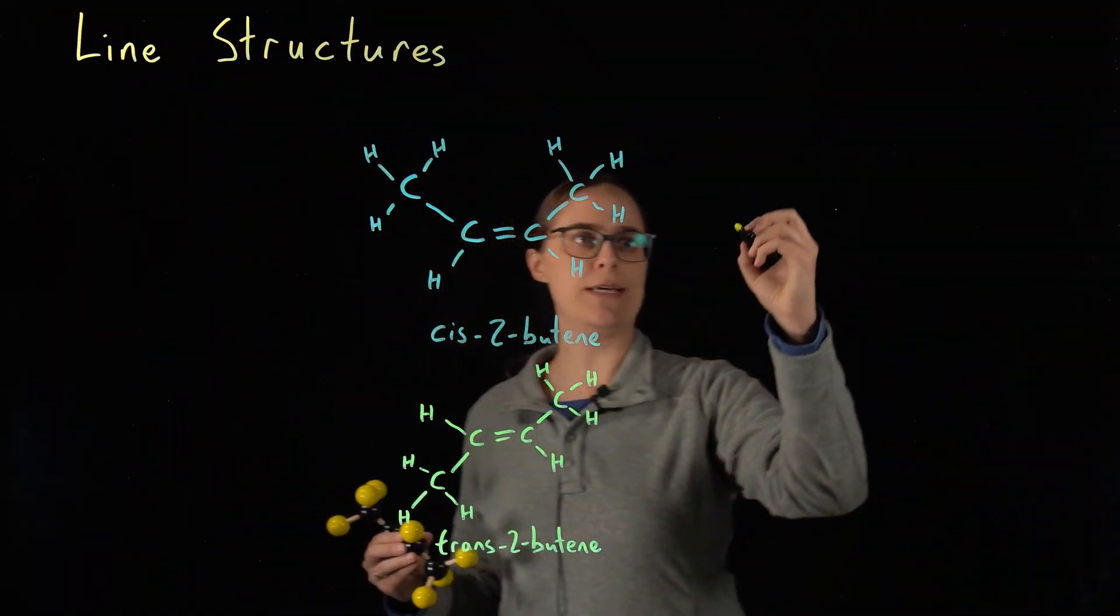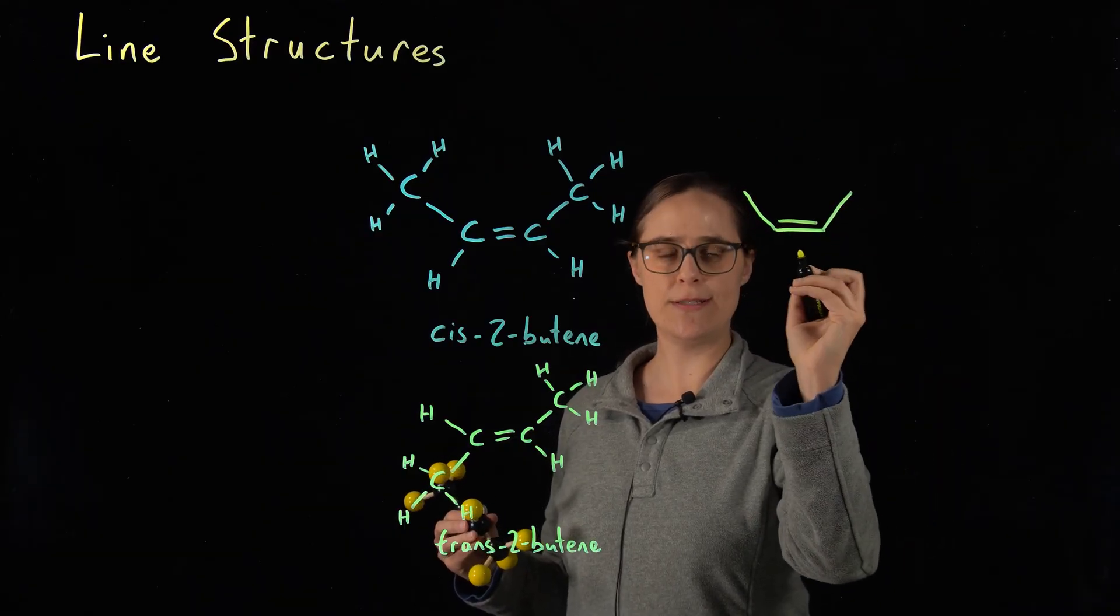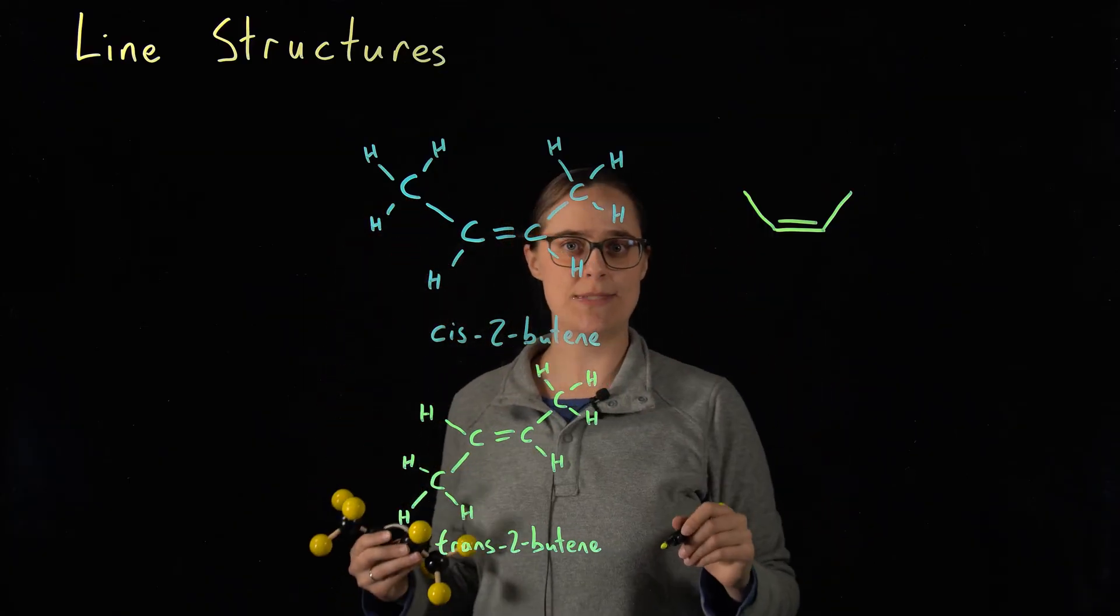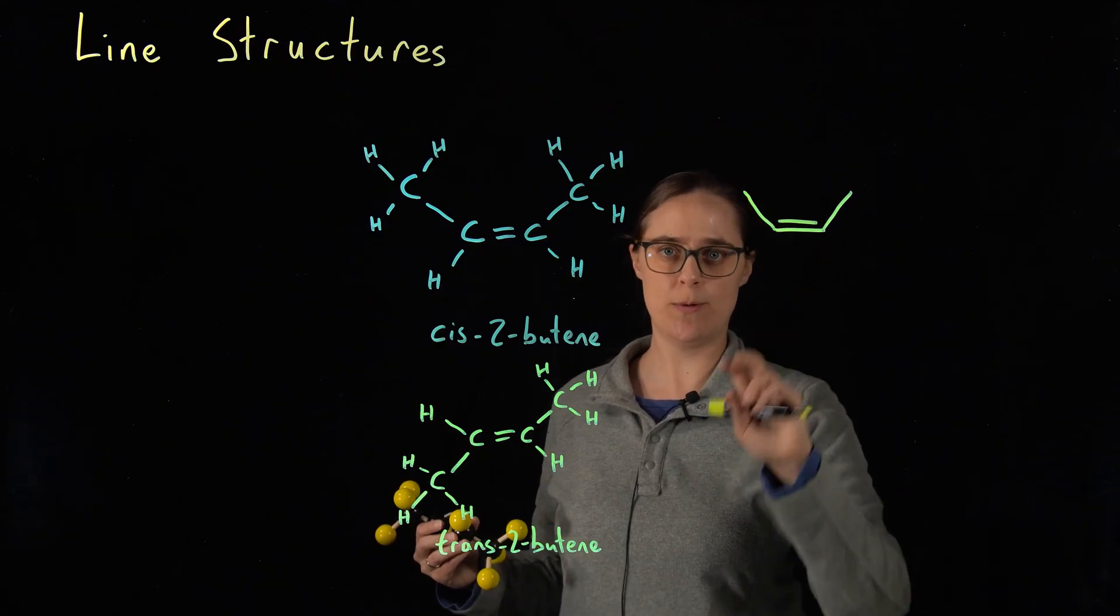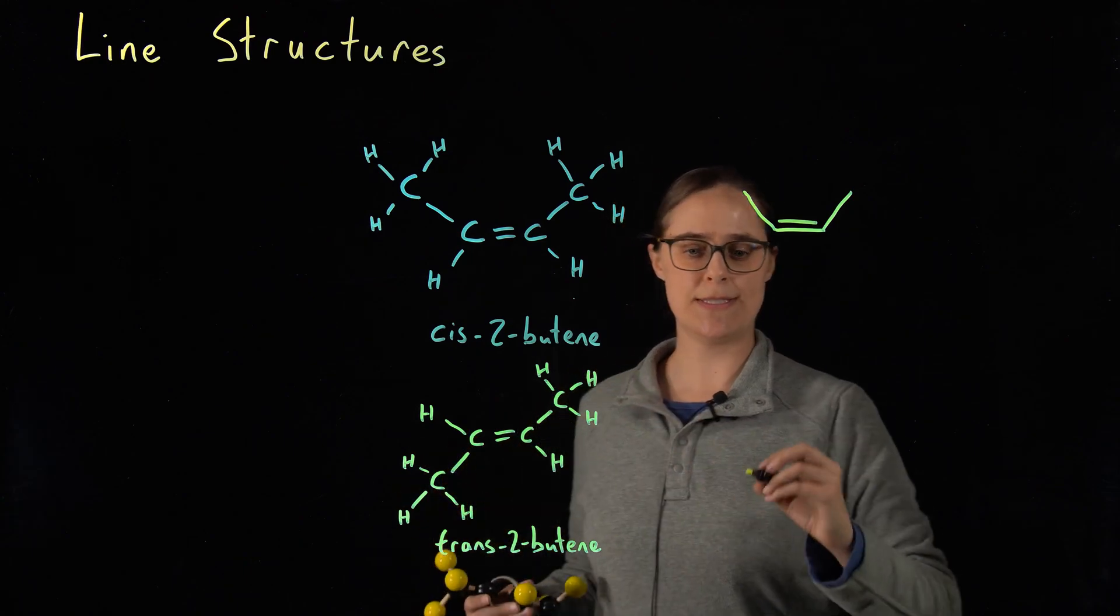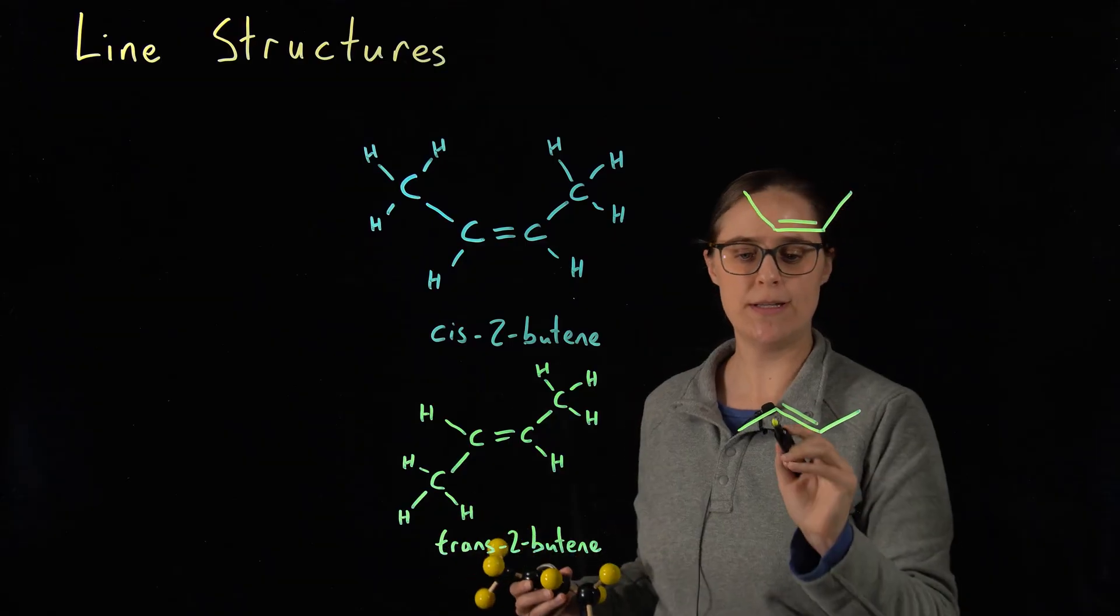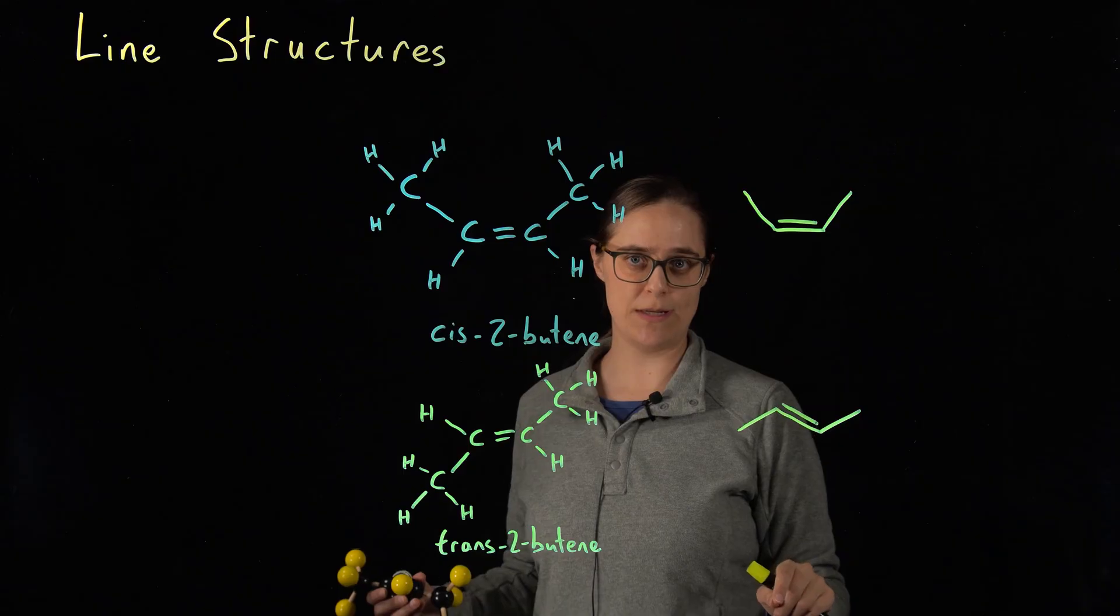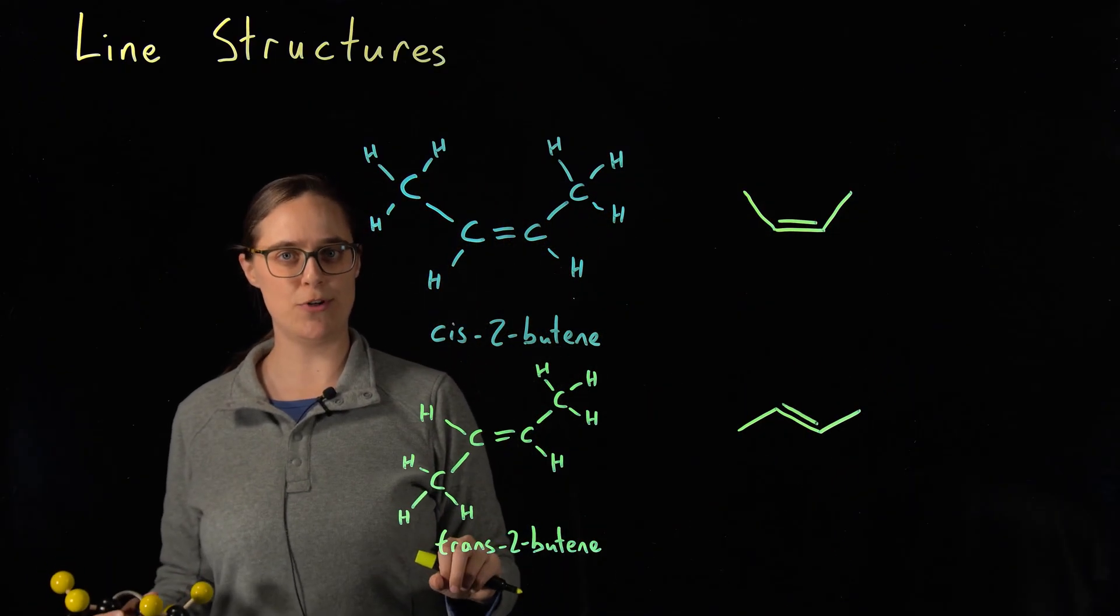So trans-2-butene, we now have our two large groups on opposite sides of the double bond. So cis-2-butene, I need to draw the double bond as two lines, but the two CH3 groups are on the same side. Trans-2-butene, these are on opposite sides. So cis and trans-2-butene do need to be drawn differently.